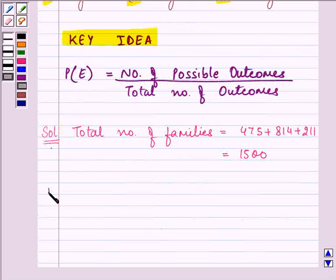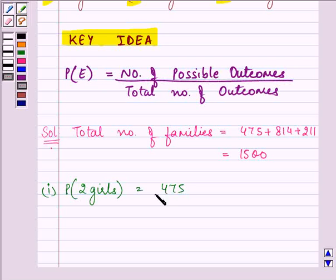The first point's answer, that is the probability of having 2 girls, is 475 families out of the total 1500, which equals 19 upon 60 on simplifying.